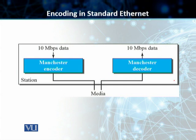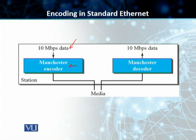In standard Ethernet, the encoding and decoding technique used is Manchester. All standard implementations of Ethernet use digital signaling, which means a baseband signal at 10 megabits per second. The data is converted to a digital signal using the Manchester scheme — a Manchester encoder converts the 10 megabits of data into a digital signal. At the receiver, the received signal is interpreted as Manchester and converted back into the original data.